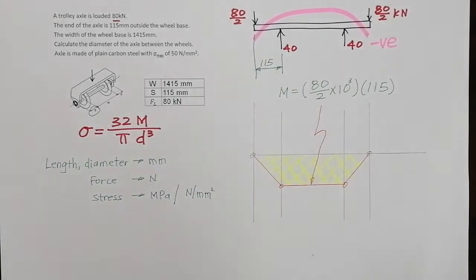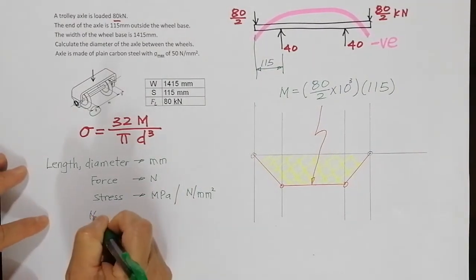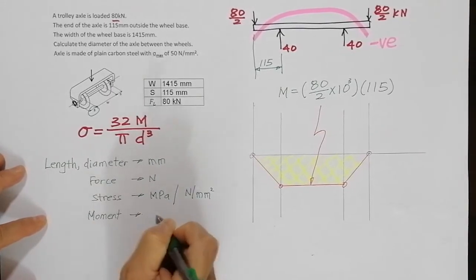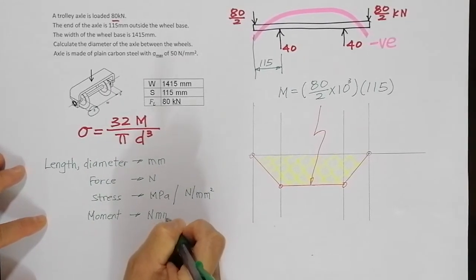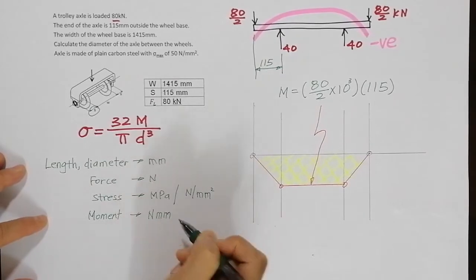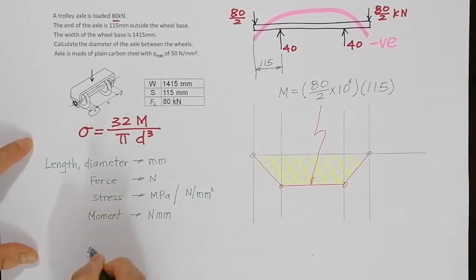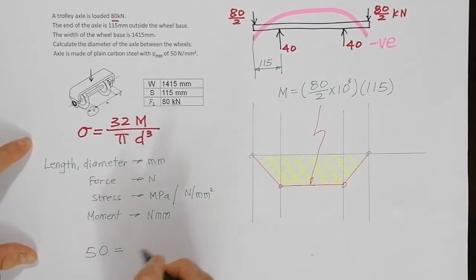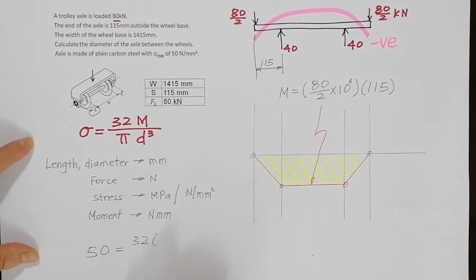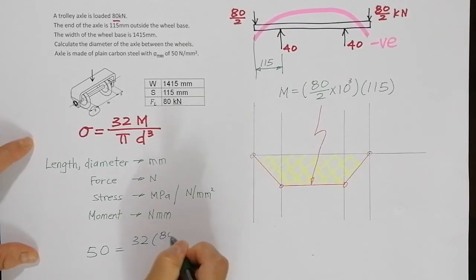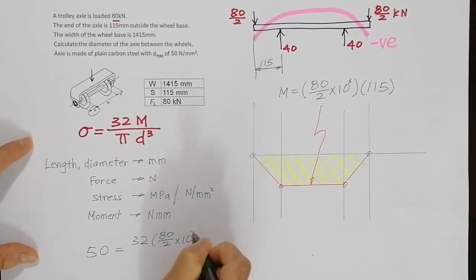And obviously when you do this, your moment, moment is force times distance, will be newton millimeter. So now we are given this as 50 newton millimeter, so I just put inside this equation: say 50 is equal to 32 times the maximum bending moment which is from here.